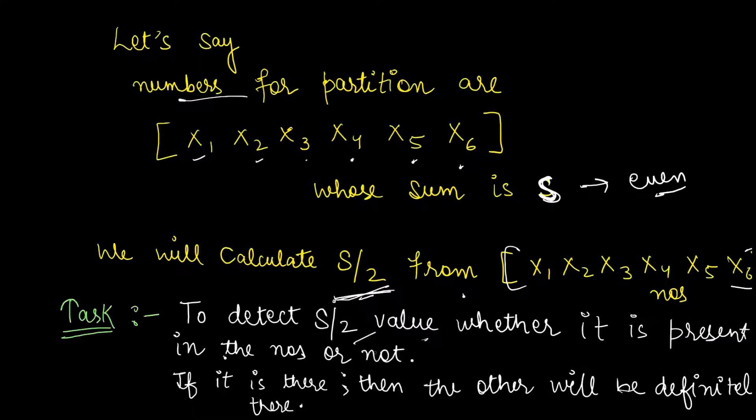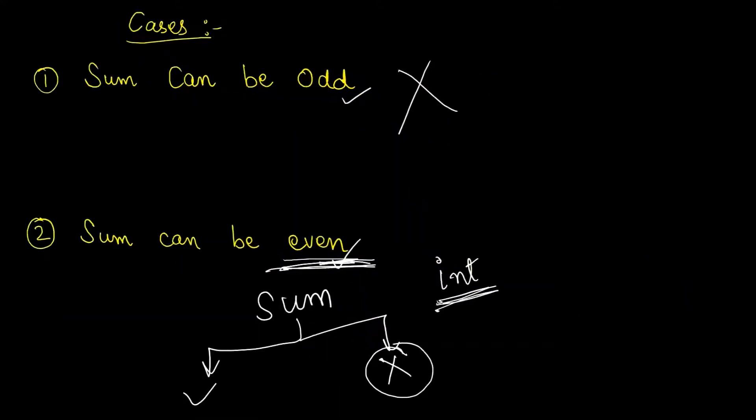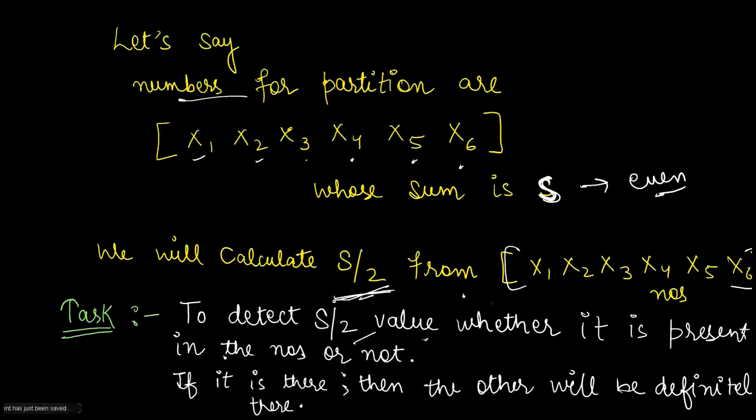Now, so as to detect S by 2 value whether it is present in the numbers or not. See here, we'll be having two sets. Through subset sum problem we can detect that these numbers share the sum, which is over here. But what about the rest numbers, whether it is present or not? So to detect S by 2 value whether it is present in the numbers or not, for that we are calculating S by 2.